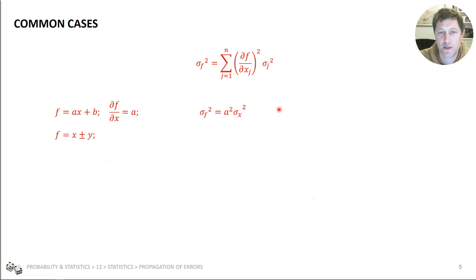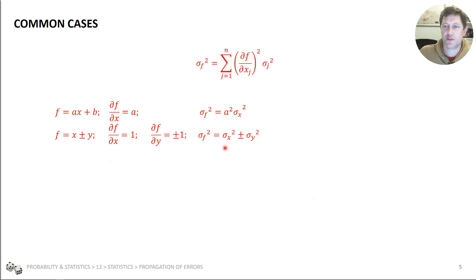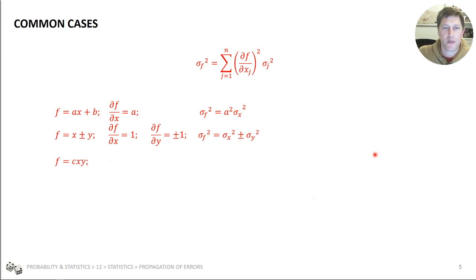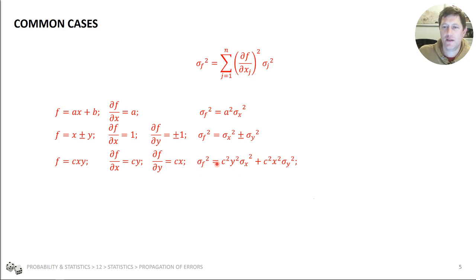Looking at the case F equals X plus Y or X plus or minus Y: we differentiate with respect to X and with respect to Y, then input those into the general equation. We get the error squared of the calculated value equals the sum of the errors squared of the individual values — or with a minus sign for the X minus Y case. Here's another example: F equals c times X times Y, where X and Y are variables and c is a constant. We differentiate with respect to X and with respect to Y, then do the summation: variance of F equals c squared Y squared times variance of X, plus c squared X squared times variance of Y.